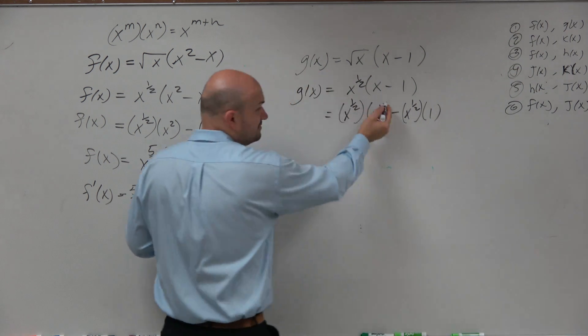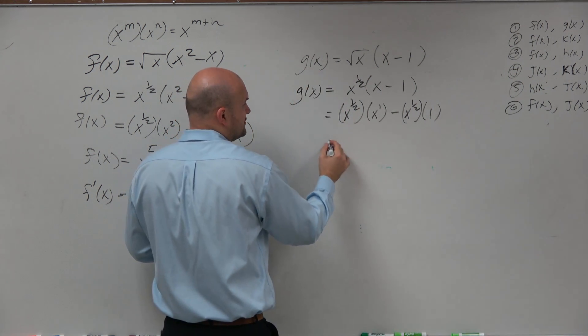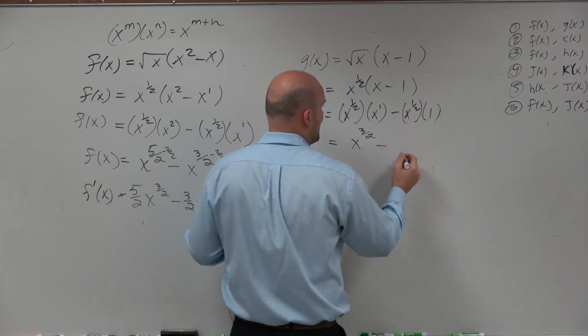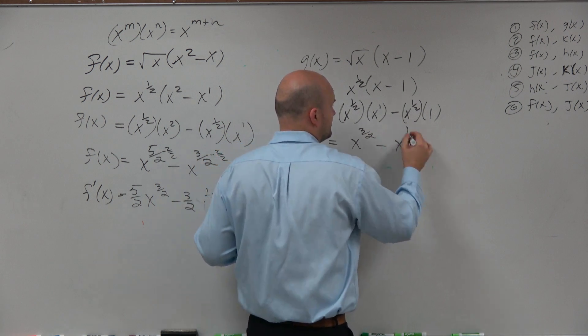So in this case, we're adding these exponents. So in reality, that's 2 over 2. This is going to be x to the 3/2 minus x to the 1/2.